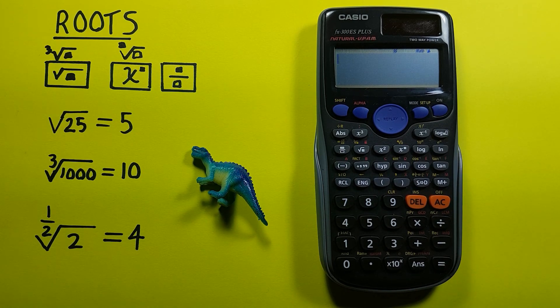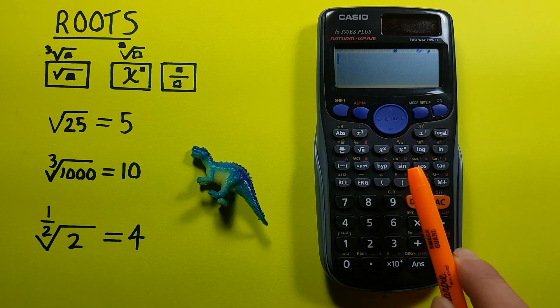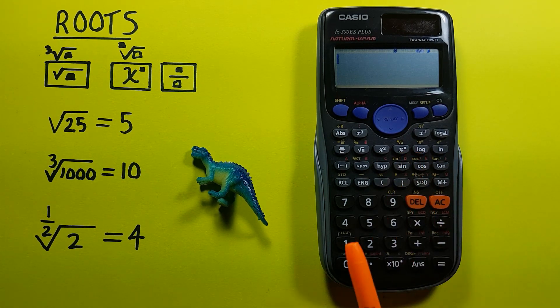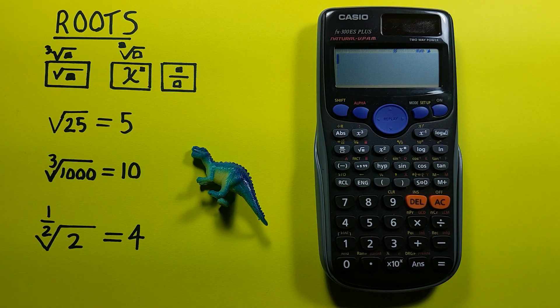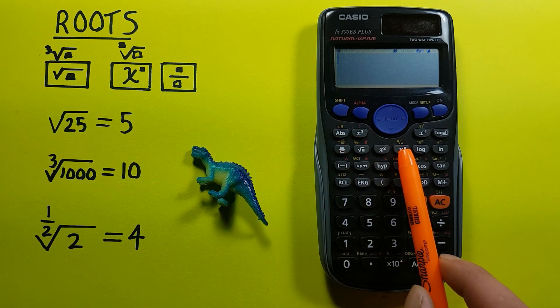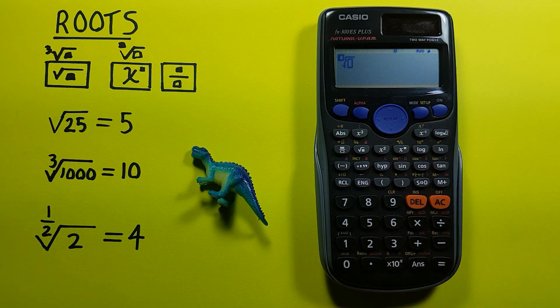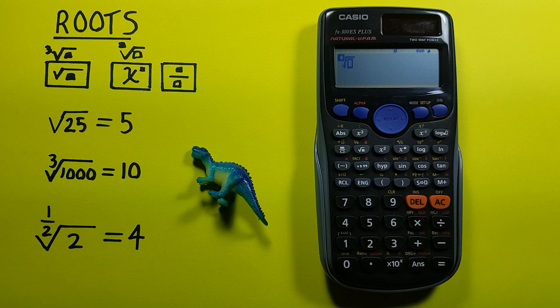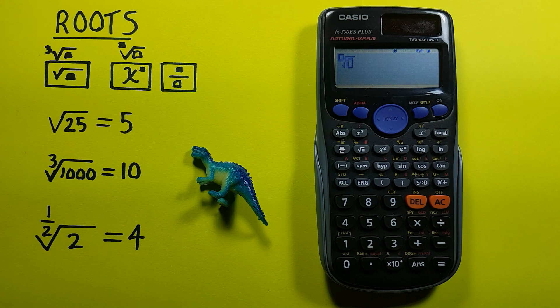What if we want to find a root that isn't a square or a cube root? Well that's when we use the shift function of this exponent key. So if we wanted to get the 1 over 2 root or half root of 2, we would press shift exponent.